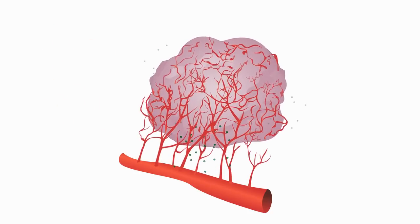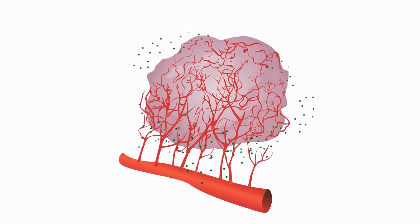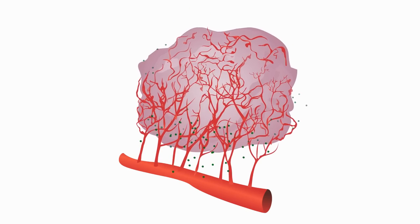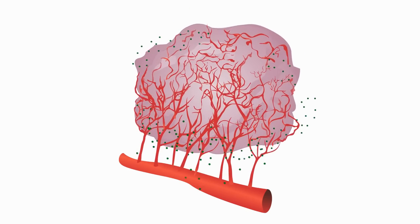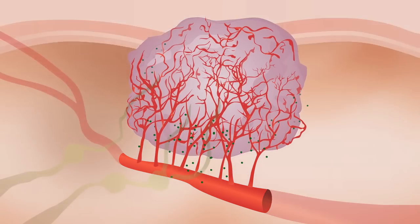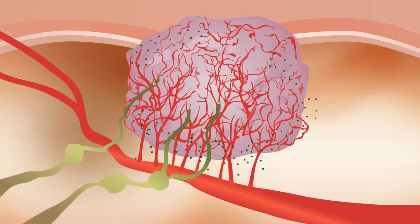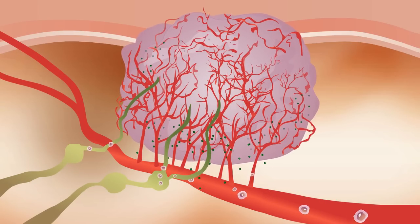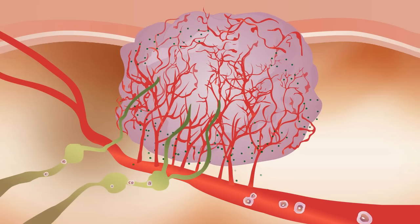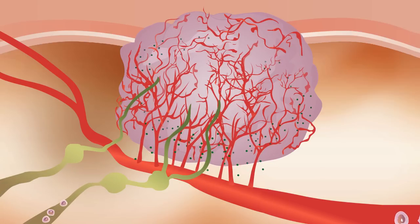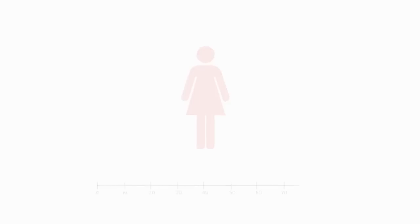As the tumor grows larger, signaling may increase and encourage even more blood vessel growth. As the tumor expands, it invades surrounding tissue. Cancer cells spread as metastasis through the blood vessels and lymph nodes, then to distant organs in the later stages of CRC progression.